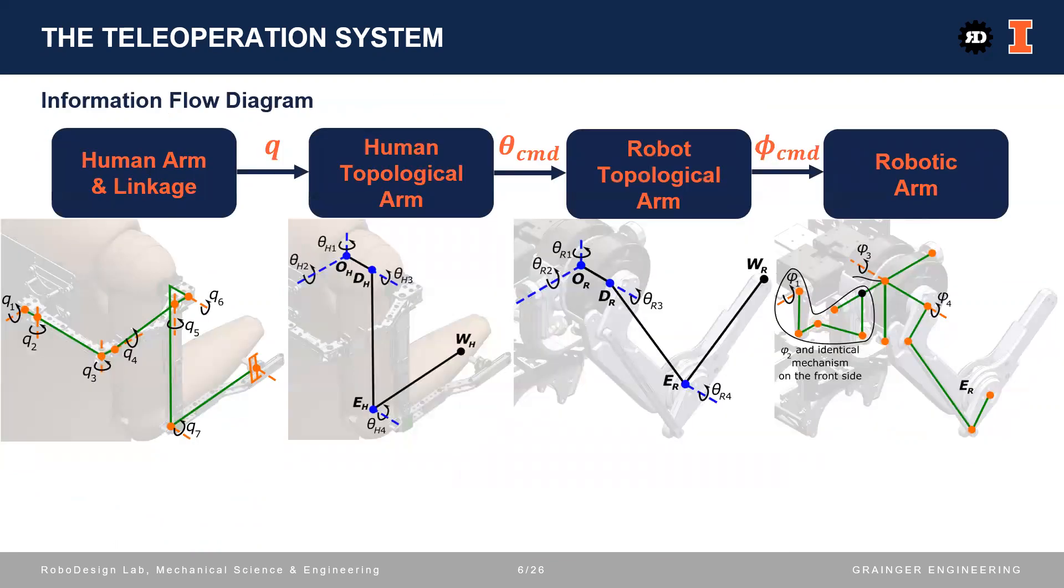Here is the information flow diagram of the teleoperation system. On the two ends, we have the human arm with linkage and robotic arm. These are the actual hardware systems. In the middle, we have the topological arms, which are the reduced models that encode the core kinematic features of the two hardware systems.